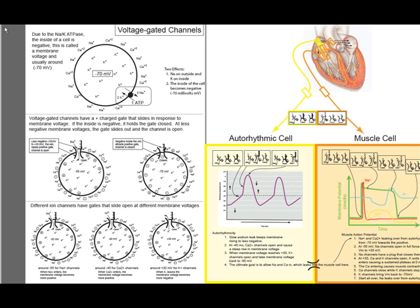This figure is basically a review of action potentials and how we get action potentials. We're going to start just like we did in A&P1. We're going to talk about the sodium-potassium ATPase, voltage-gated channels, and then the sequence of how those voltage-gated channels open and close to give us a change in the membrane voltage of a cell.